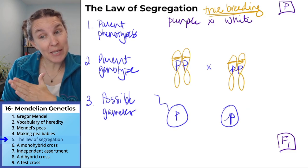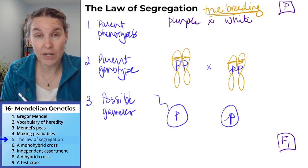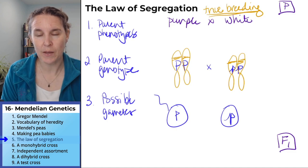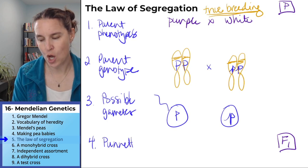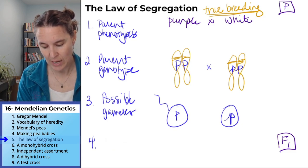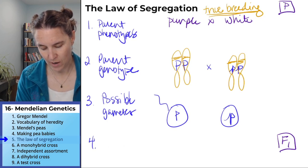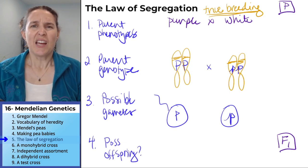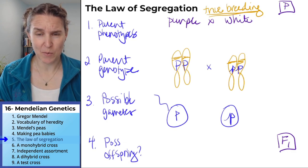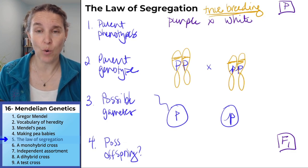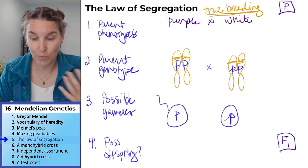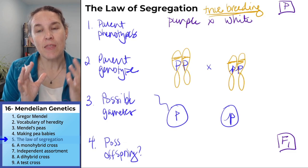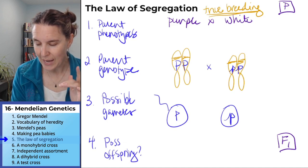All gametes from the white parent carry little p — we don't have any other gamete to donate. Step four is to build a Punnett square. The task is to determine all possible offspring. A Punnett square is a methodical tool we use to quantify possible offspring combinations.